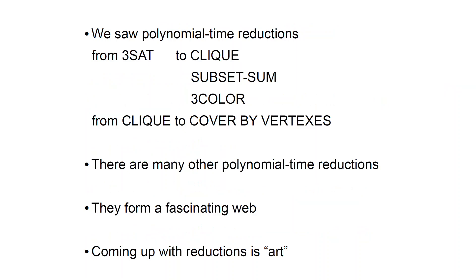To sum up, we saw polynomial time reductions from 3SAT to Clique, from 3SAT to Subset Sum, from 3SAT to 3-Coloring, and also from Clique to Vertex Cover. There are many other polynomial time reductions — they form a fascinating web — and coming up with reductions is an art. There is no recipe; you have to understand the problem, create gadgets, and have ideas. The best proof that it is art is to look at the picture of this web. This concludes the lecture.